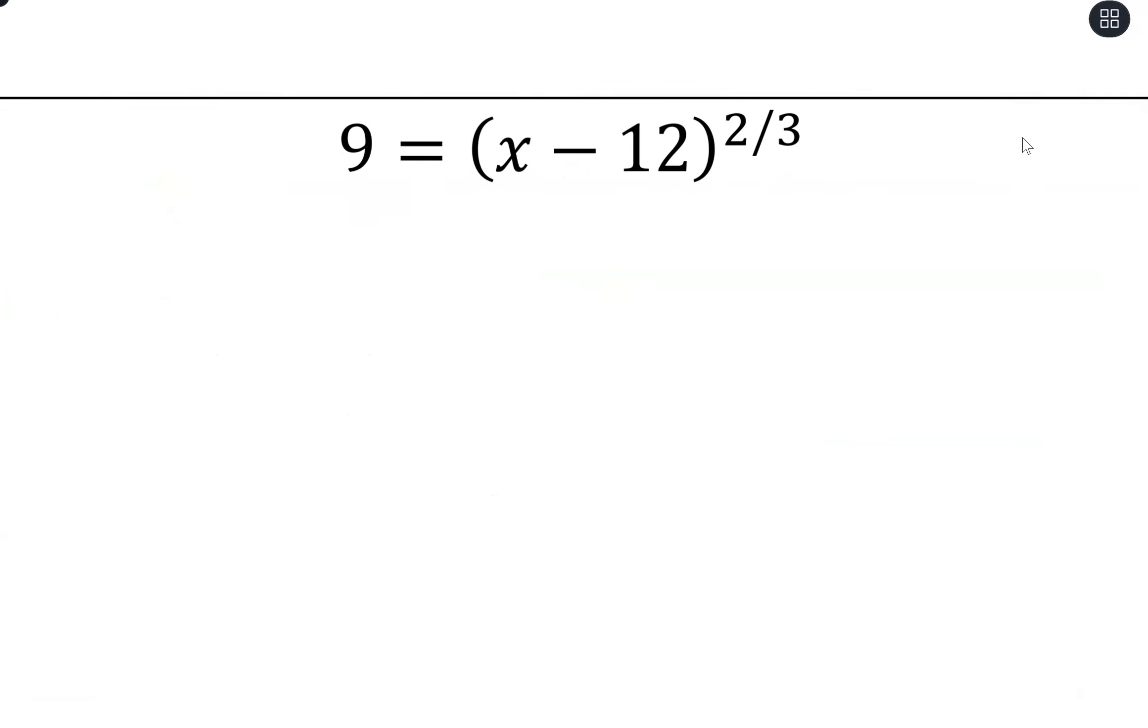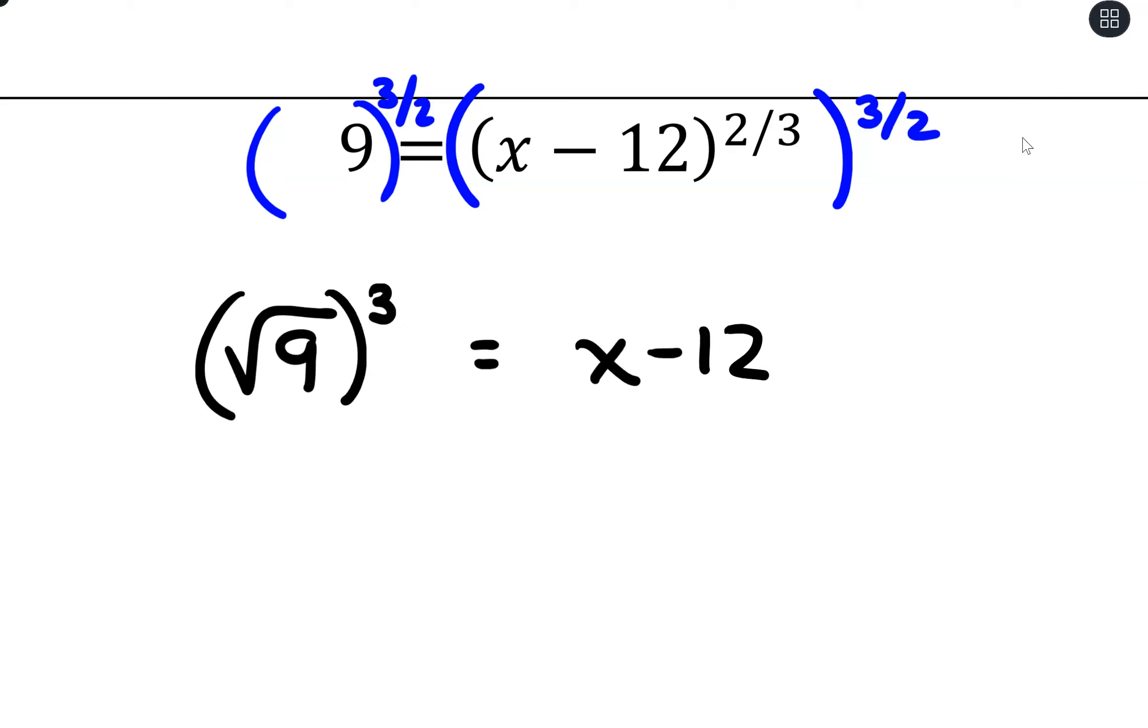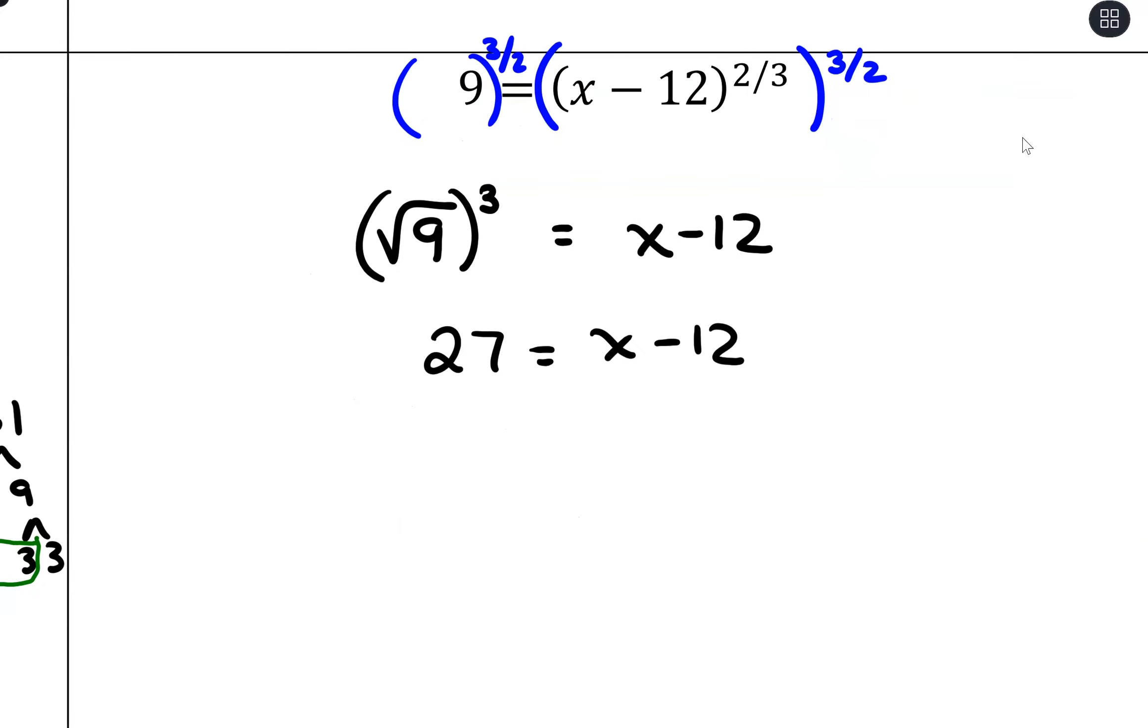Last one here. So we have our exponential piece all isolated. So what we're going to do is go ahead and raise that. And it will be a positive 3 halves, positive 3 halves. So this is the square root of 9. And that's going to be cubed equals x minus 12. So that is going to be 3 cubed, which is 27, equals x minus 12. Add 12 to both sides for a 39.